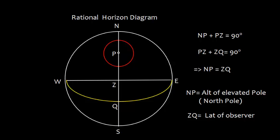Let me explain what is elevated pole. The pole which is above the horizon, like in this diagram, North Pole is above the horizon, that is called elevated pole. And here, the South Pole is not visible, so that is called depressed pole.